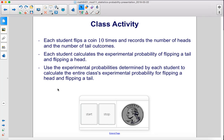Class Activity. Each student flips a coin 10 times and records the number of heads and the number of tail outcomes. Each student calculates the experimental probability of flipping a tail and flipping a head. Use the experimental probabilities determined by each student to calculate the entire class's experimental probability for flipping a head and flipping a tail.